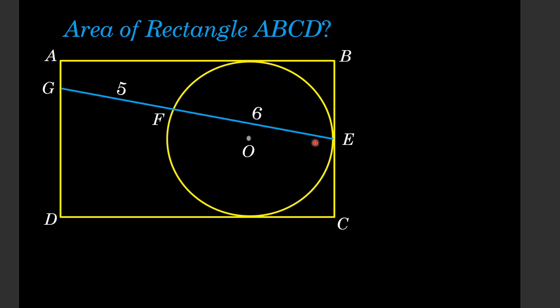First of all, we draw a line segment from point E to the central point O and extend this line towards the side AD, which meets AD at point Q and also crosses the circle at point P, such that EP is actually the diameter of the circle.